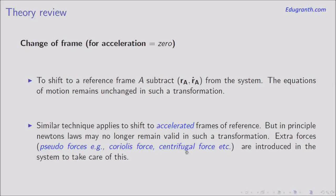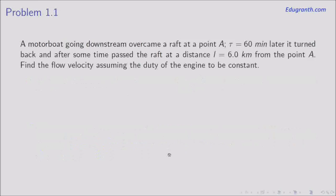We will learn more about pseudo forces later, especially in circular motion. Now let's move on to the problem. It says: a motorboat going downstream overcame a raft at point A. Sixty minutes later it turned back and after some time passed the raft at a distance L equal to 6 km from point A. Find the flow velocity, assuming the duty of the engine to be constant.